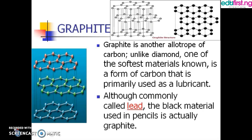Next we have the second allotrope, which is graphite. Graphite is another allotrope, unlike diamond — it is the softest material known and is primarily used as a lubricant. If we look at a pencil, that black substance we call 'lead' is actually graphite. This is the structure of graphite.